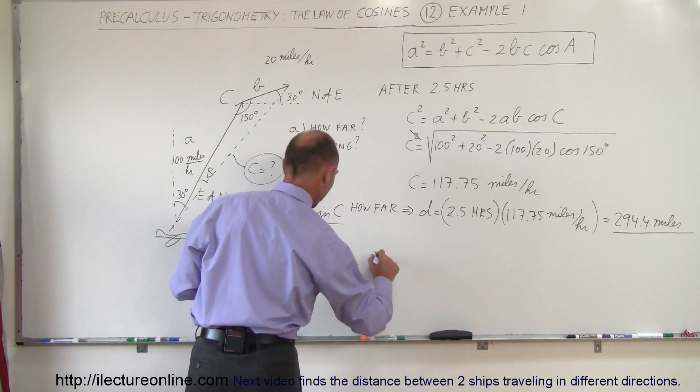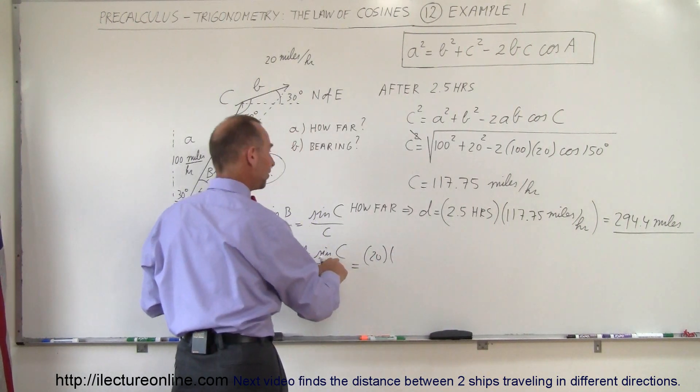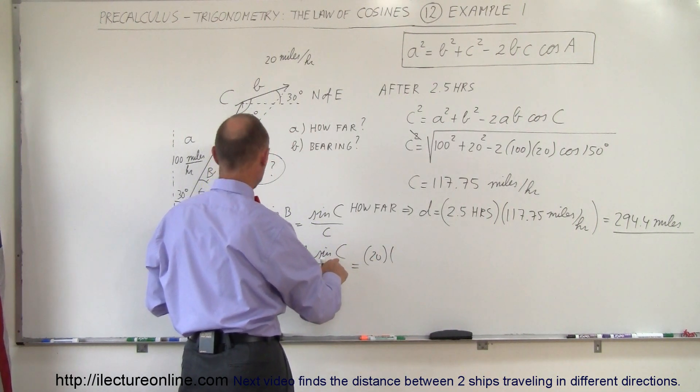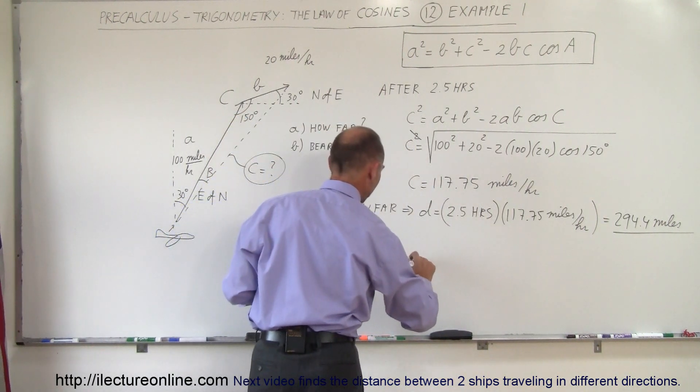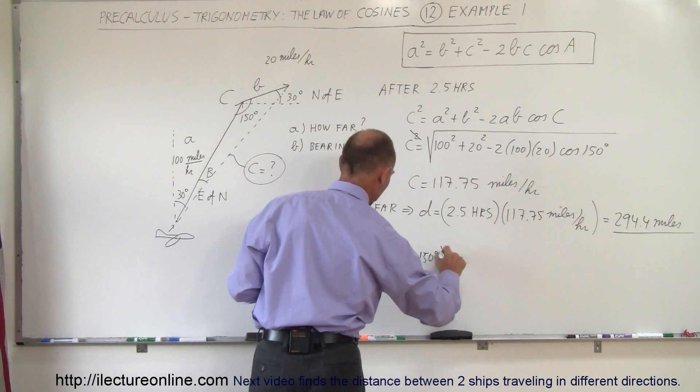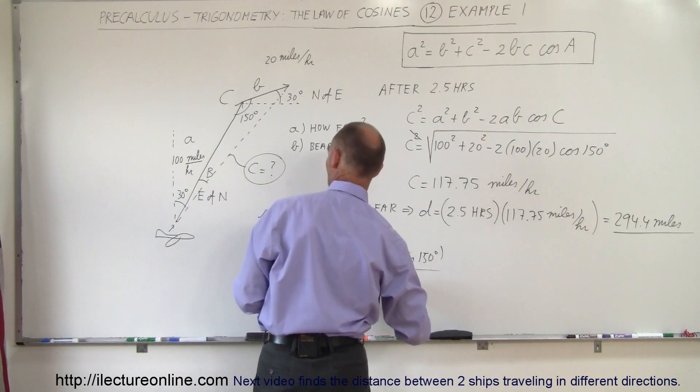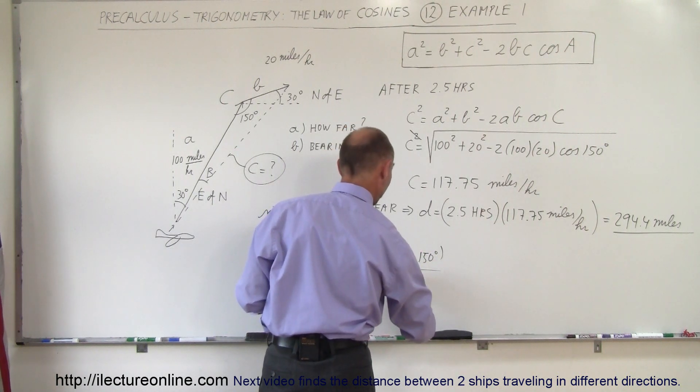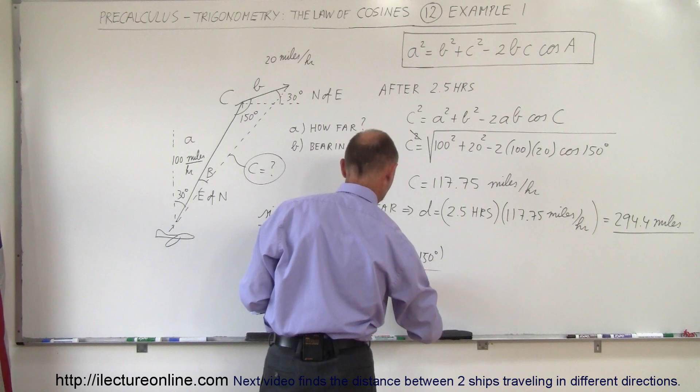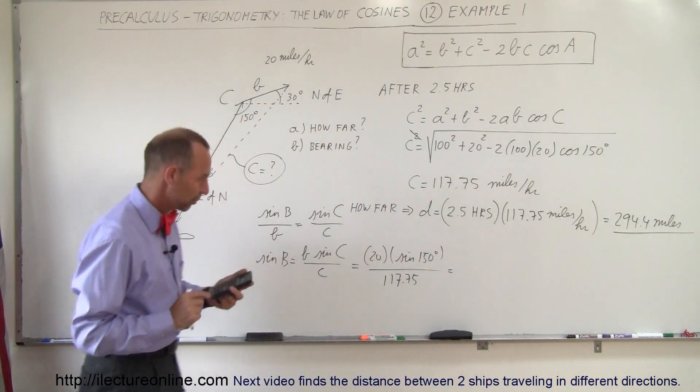Well, B is equal to 20. C was 150 degrees, so that would be the sine of 150 degrees divided by C, which we said was 117.75. Okay, what is that equal to?